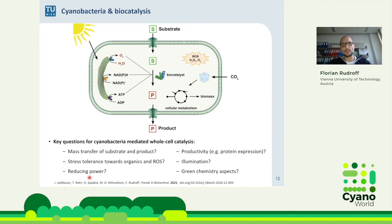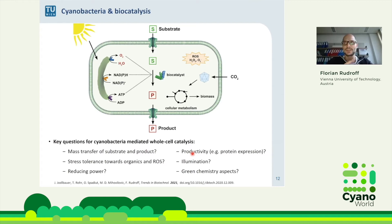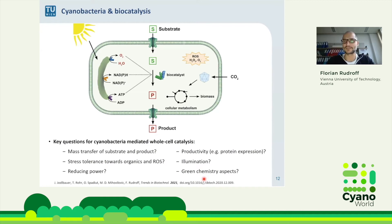Cyanobacteria should be well-fitted for ROS since they produce it in situ already — good, because ROS can kill our introduced enzymes. Regarding productivity: growth rate, protein expression, and illumination all matter. On the green chemistry side, just because we use biocatalysis or metabolic engineering doesn't automatically mean the process is green — that's often not true when you calculate it through. This deserves careful consideration.